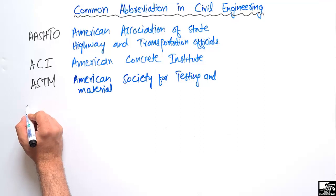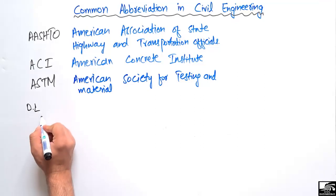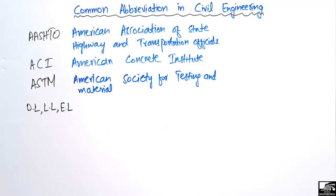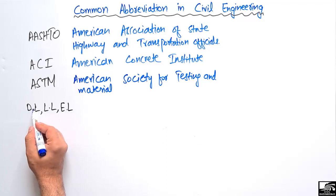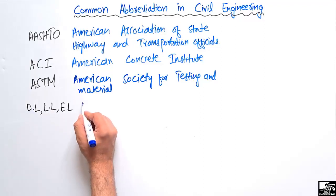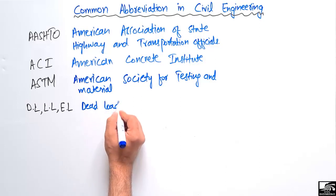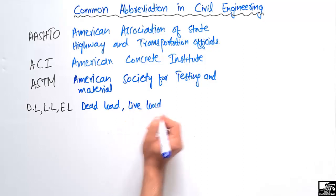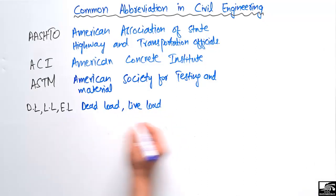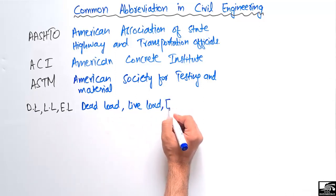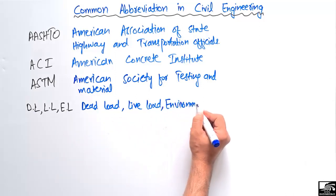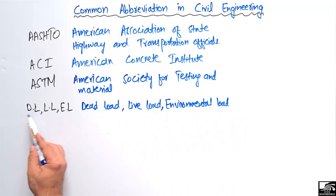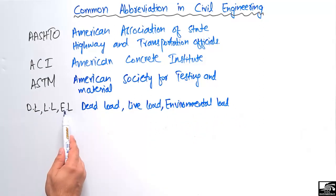The fourth set of abbreviations involves loads. DL stands for dead load, LL stands for live load, and EL stands for environmental load. When we see these abbreviated forms with a dot between the letters, they represent these types of loads — dead load, live load, and environmental load — and we must keep these in mind.